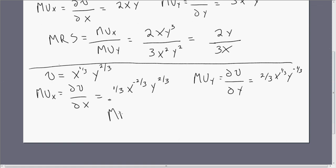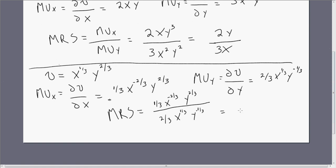The marginal rate of substitution is the marginal utility of good x divided by the marginal utility of good y. Using rules of exponents, bringing down x to the minus 2/3 power into the denominator and moving y to the minus 1/3 in the denominator into the numerator, we're left with y over 2x. The 1/3 divided by 2/3 just leaves us with 1/2, so that's where the 2 is coming from.